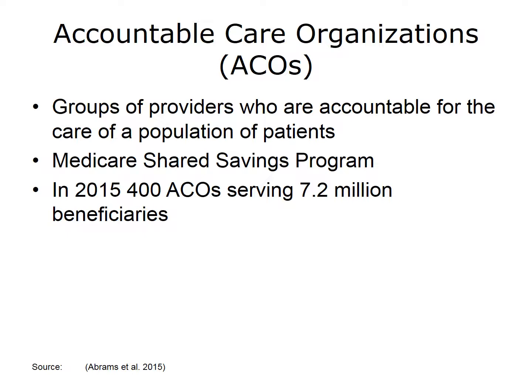Accountable care organizations are groups of providers—doctors, hospitals, and others—who agree to take responsibility for the quality and cost of care for a defined population of patients. The ACA established the Medicare Shared Savings Program to encourage development of Medicare ACOs. If an ACO met certain quality benchmarks and kept spending within a targeted amount, generating savings, that ACO would receive 50% of those savings. In 2015, there were 400 ACOs serving about 14% of the Medicare population, or 7.2 million beneficiaries. The success of ACOs in improving quality and cost containment has been somewhat mixed; for example, in 2013, among the 220 ACOs in existence, only 52% met quality benchmarks while keeping spending below budgeted targets.